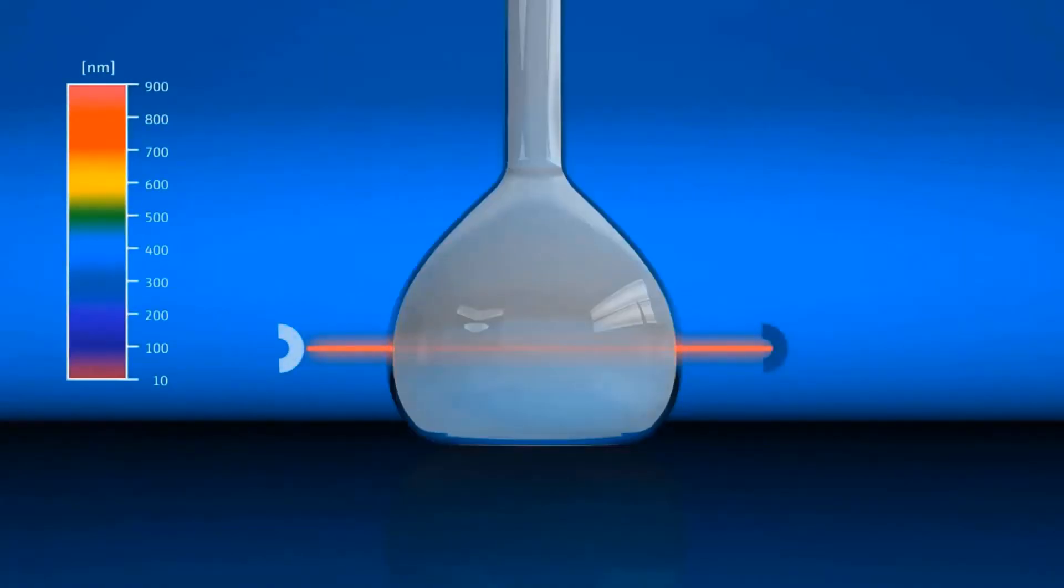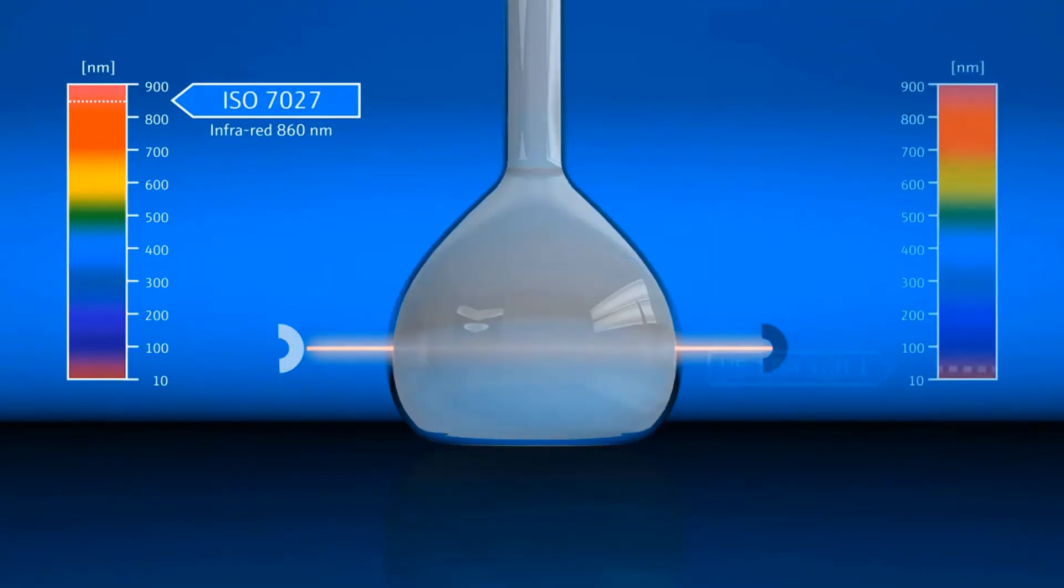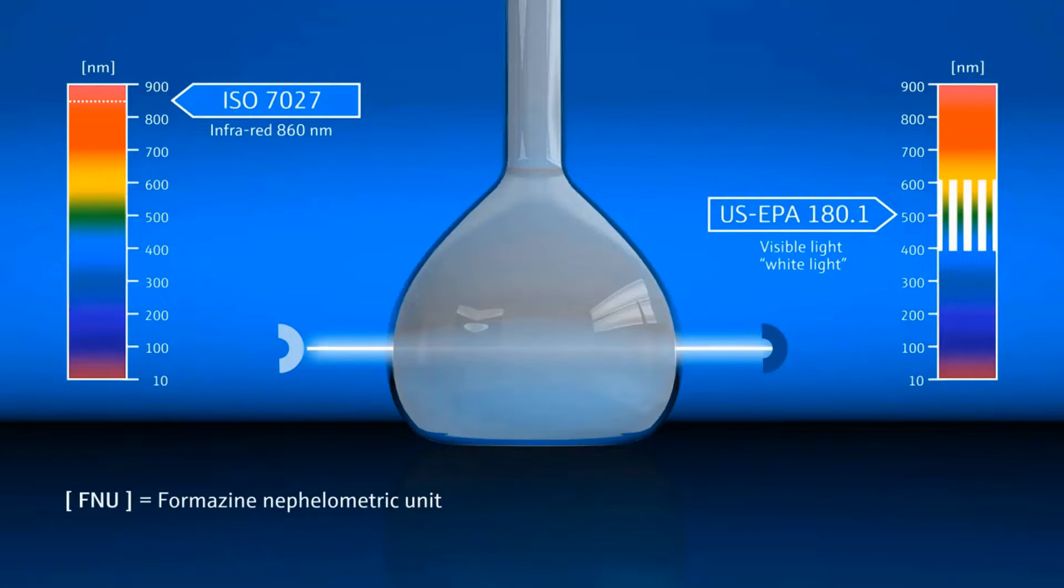ISO 7027 stipulates an infrared source which lies in non-visible wavelength range. And the turbidity measurement according to US EPA 180.1 uses white light in the visible range. The turbidity unit differs depending upon the selected method. For measurement according to ISO, the defined units are formazine nephelometric unit or formazine attenuation unit. But for measurement according to EPA, the unit is nephelometric turbidity unit.